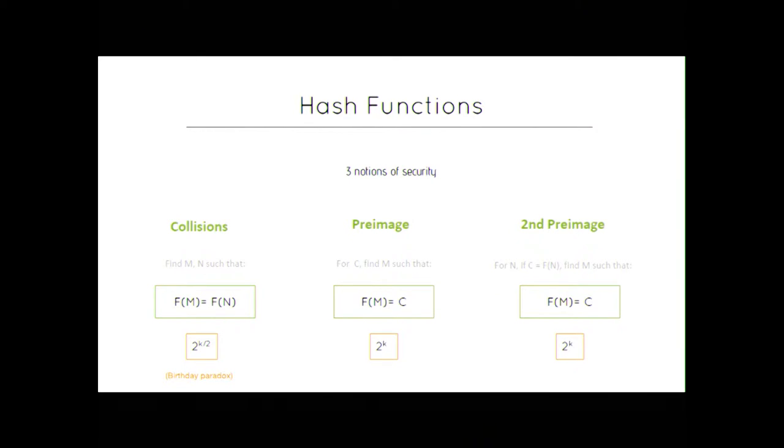So, security notions used to measure security of hash functions are roughly these three: collisions, pre-image resistance, and second pre-image resistance. Collisions are the fact of finding two different messages M and M prime such as their hash are the same.